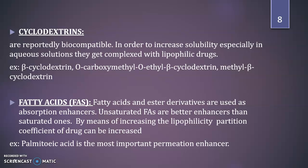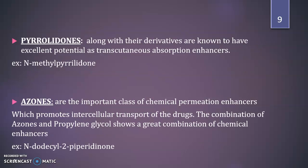Fatty acids and their ester derivatives are used as absorption enhancers. Unsaturated fatty acids are better enhancers than saturated ones, as they increase lipophilicity and the partition coefficient of the drug. Palmitic acid is an important and widely used permeation enhancer. Pyrrolidones and their derivatives have excellent potential as transcutaneous absorption enhancers; an example is N-methylpyrrolidone. Azones are an important class of chemical permeation enhancers which promote intracellular transport of drugs; the combination of azones and propylene glycol is highly effective, with an example being N-dodecyl-2-pyrrolidinone.